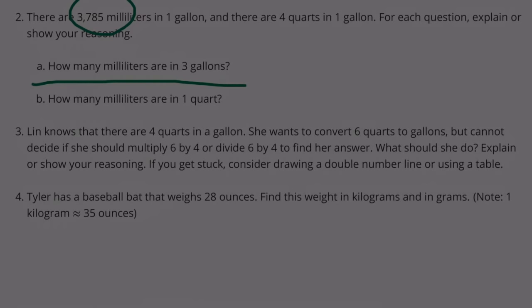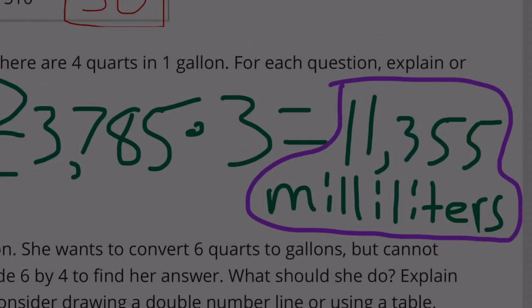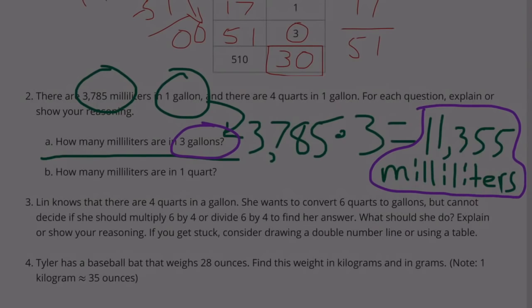3,785 milliliters in 1 gallon. So in order to turn that 1 gallon into 3 gallons, we need to multiply it by 3. So if we multiply 3,785 by 3, we would get 11,355 milliliters in 3 gallons.